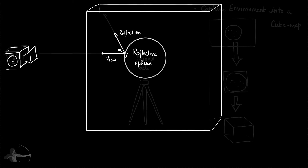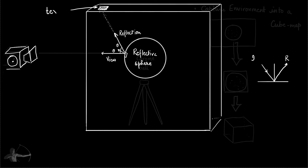The law of reflection says that the angle between the normal and the view direction equals the angle between the normal and the reflection — these are called the incident ray direction and the reflected ray direction. Once we calculate the reflection direction, we will calculate where this vector hits the environment map. We will take the color of the environment map — the texel color — and apply it onto the surface. That's how we fill the complete surface of the sphere or any object in the scene. So that's how image-based reflection works.